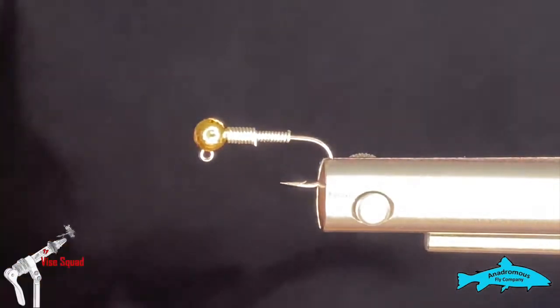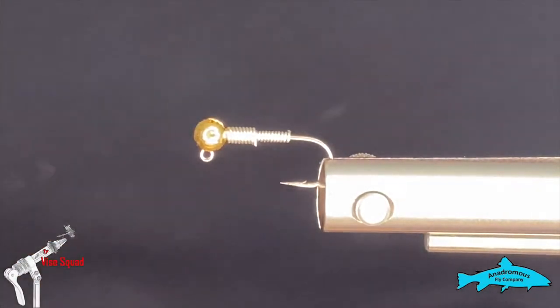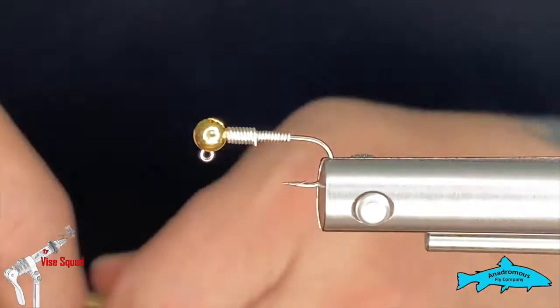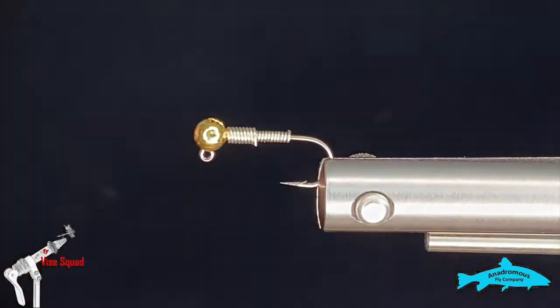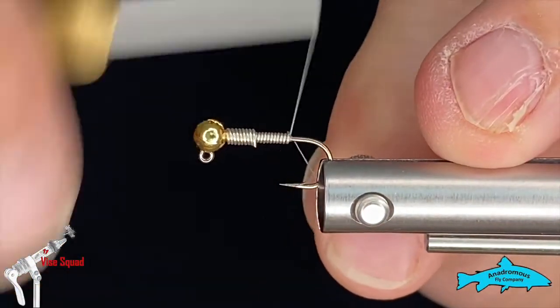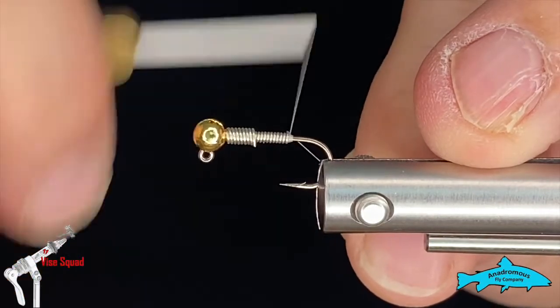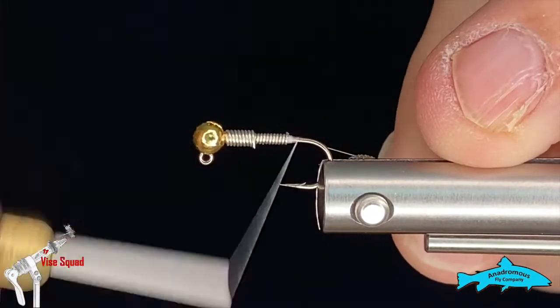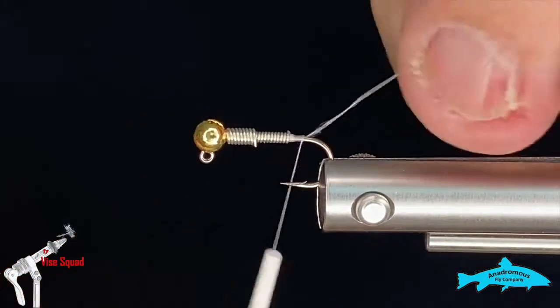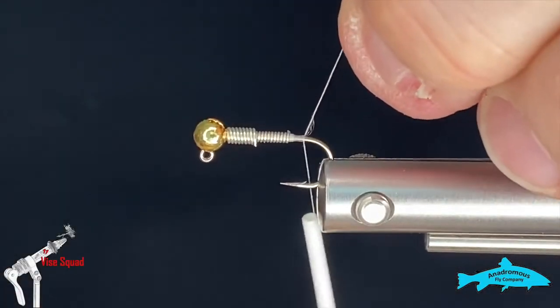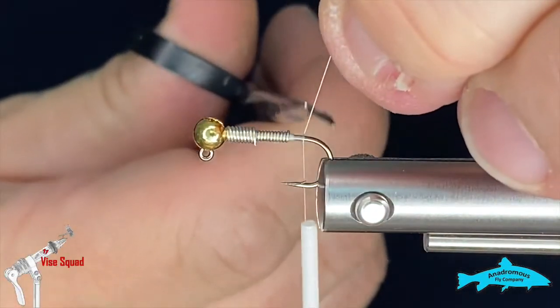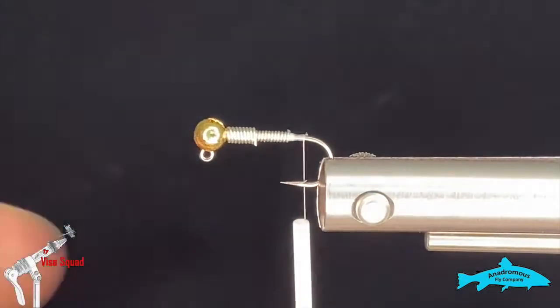We'll set those aside. For the thread we're going to use some 8/0 white uni and I'm going to start that right behind the lead wraps there. We'll reach in there with our good scissors and snip that out.